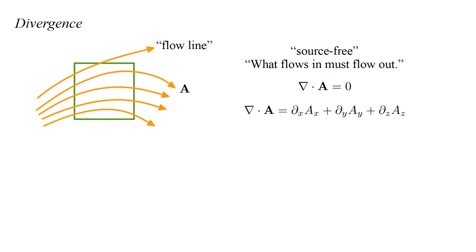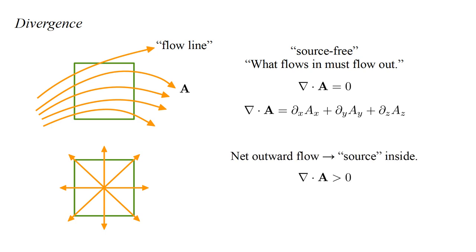In rectangular coordinates, the divergence of A is the x-derivative of the x-component, plus the y-derivative of the y-component, plus the z-derivative of the z-component. If there is a net outflow of water, then the divergence is positive, and there must be a source in the interior. If there is a net inflow of water, then the divergence is negative, and there must be a sink in the interior.